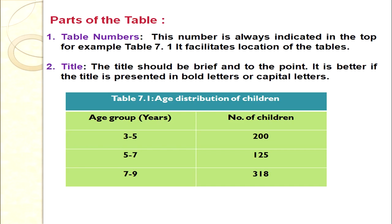The first part is the table number. Every table should have a table number, always indicated at the top — for example, Table 7.1. We number the table because it facilitates location of the tables. The second part is the title. Every table must have a title that is brief and to the point. If possible, it should be in bold and capital letters.